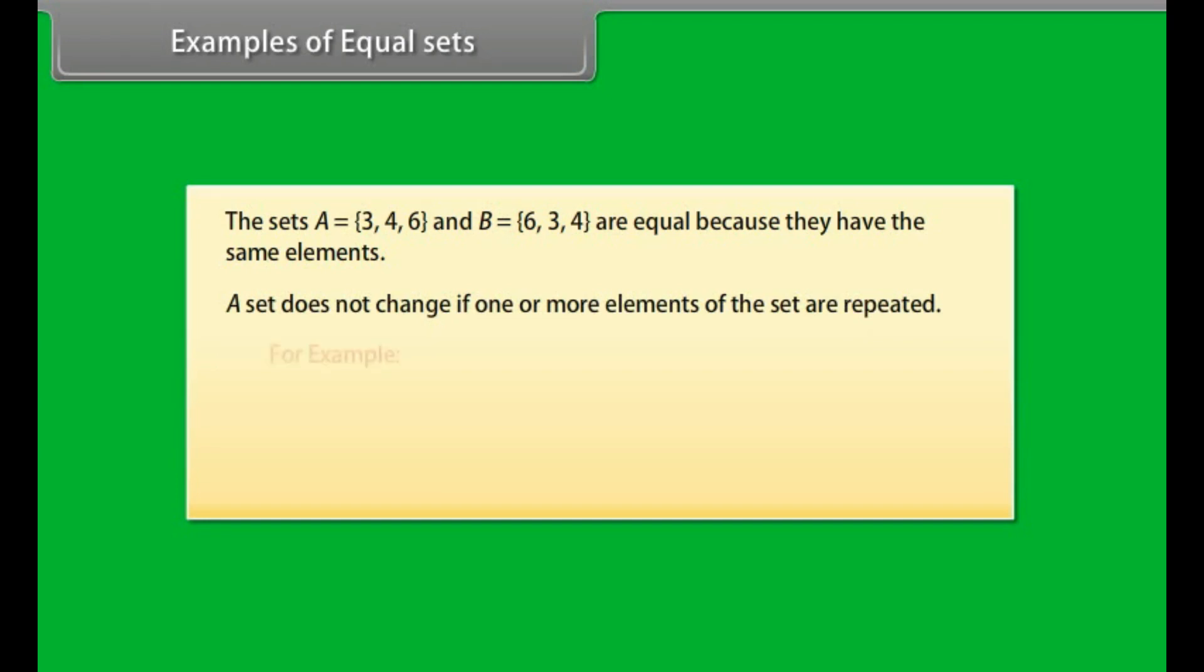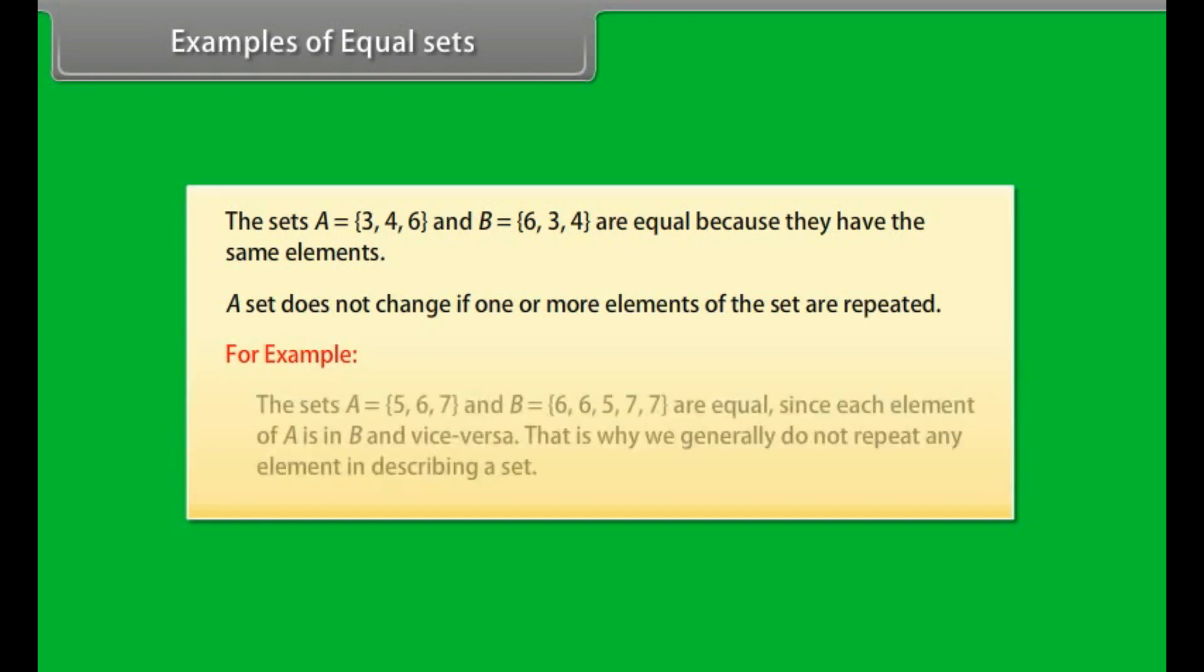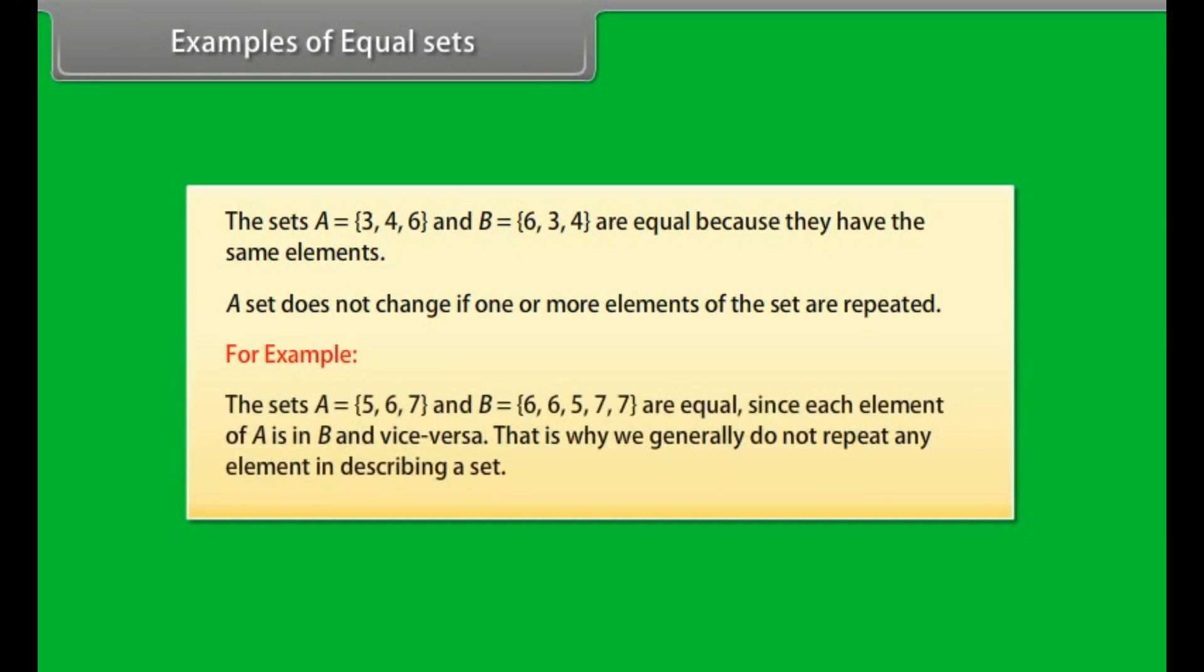A set does not change if one or more elements of the set are repeated. For example, the sets A equals {5, 6, 7} and B equals {6, 6, 5, 7, 7} are equal since each element of A is in B and vice versa. That is why we generally do not repeat any element in describing a set.